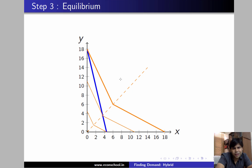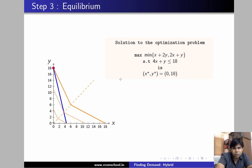We continue moving up until we hit the vertical axis, where there is no further scope to move. That gives us the highest possible IC achievable given the budget set. The solution to the utility maximization problem is (x, y) = (0, 18): the consumer spends all income on y and purchases no units of x.